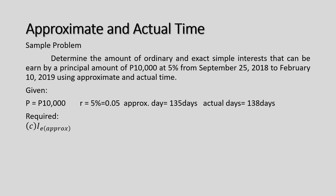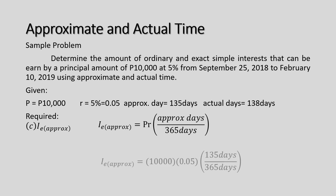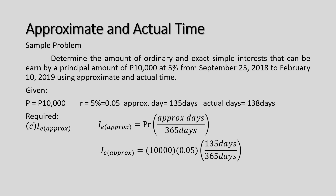For letter C — exact simple interest using approximate time — the denominator becomes 365 days. The formula is P times R times the approximate number of days divided by 365. Substituting: 10,000 times 0.05 times 135 days divided by 365 days gives P184.93.